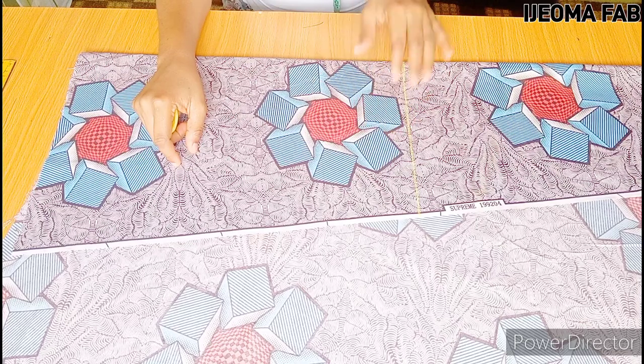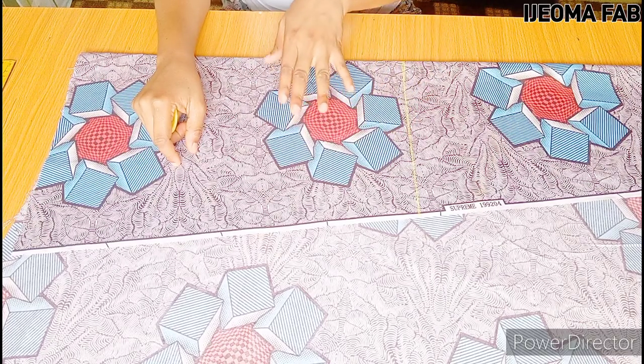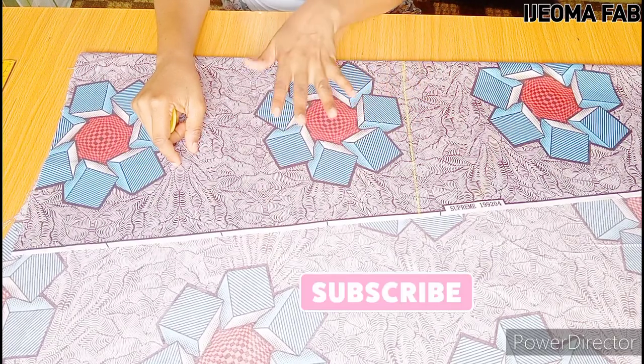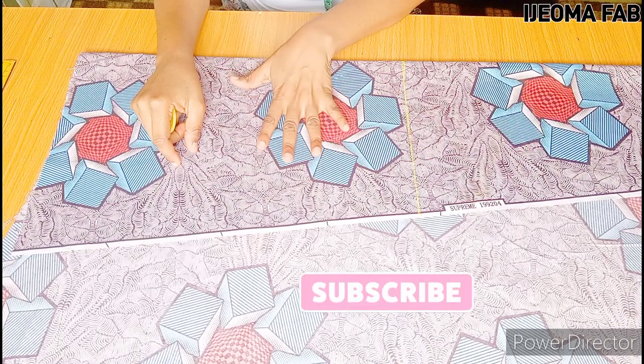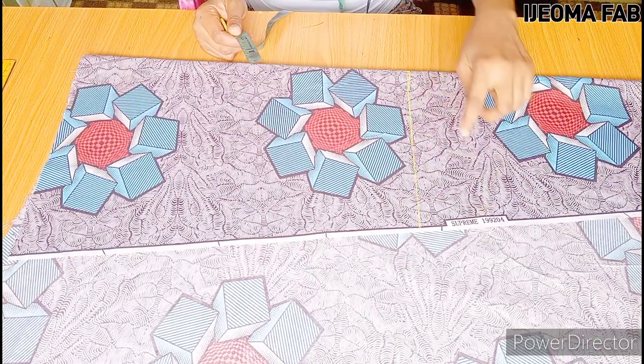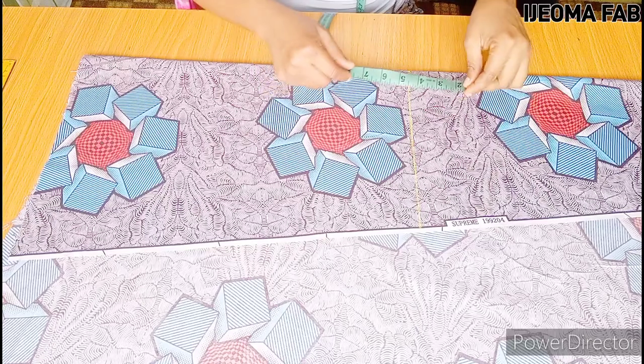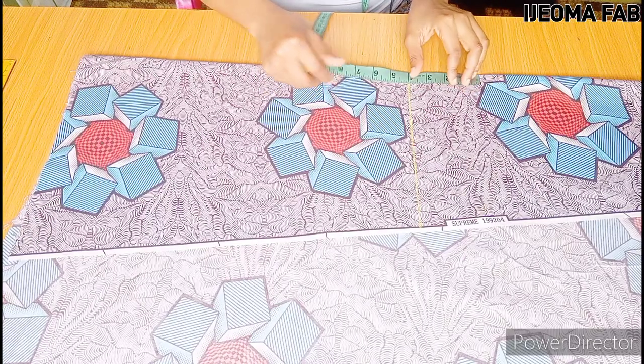Please note, if you have to do any marking, please do it on the wrong side of your fabric. I'm marking on the right side of the fabric for the sake of this tutorial. From this line which I have here, I'll be stepping upwards by four inches, so I'm going to mark four inches here.